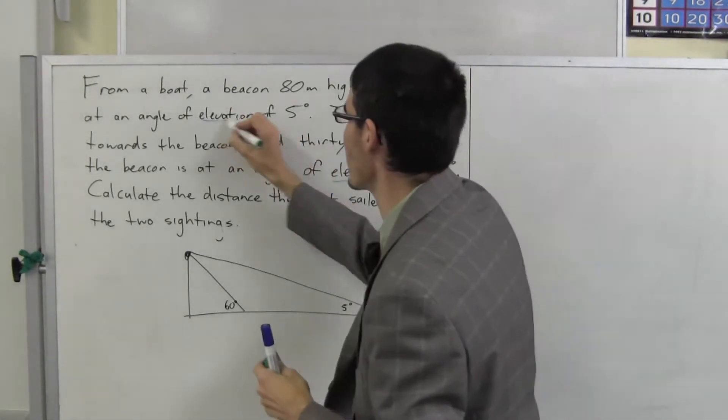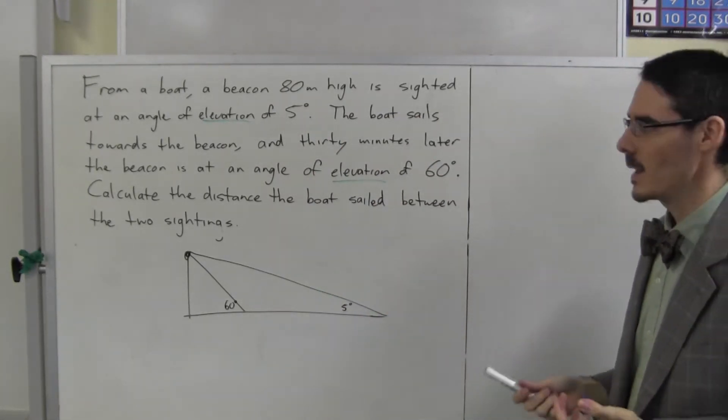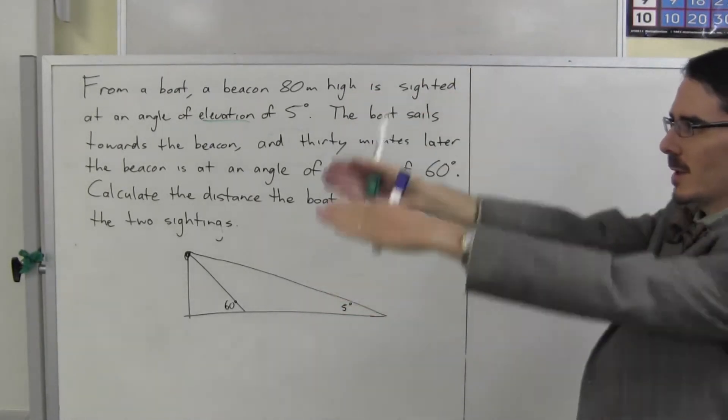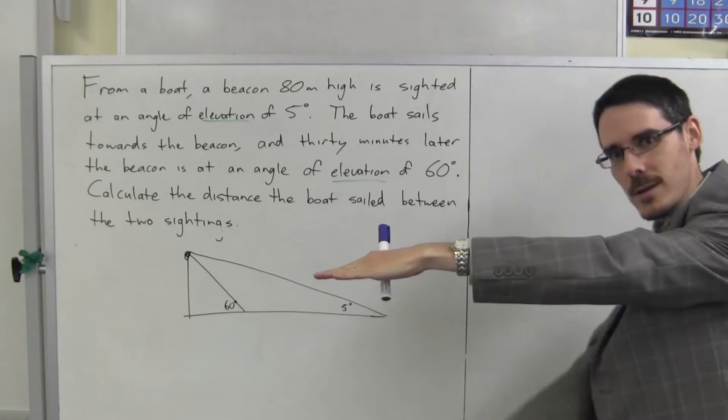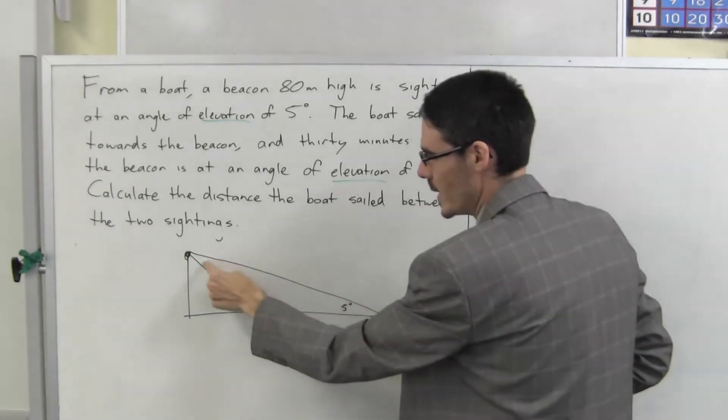Angle of elevation. An angle of elevation or an angle of depression is always measured from horizontal. It's always the angle up for elevation or down for depression. Always compared to horizontal. It's always this angle, never this angle.